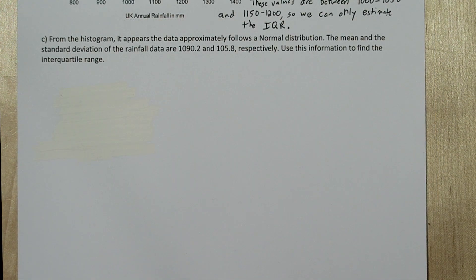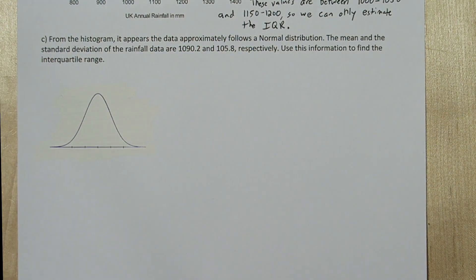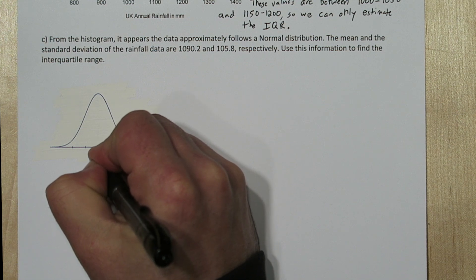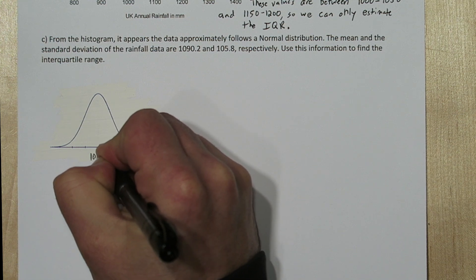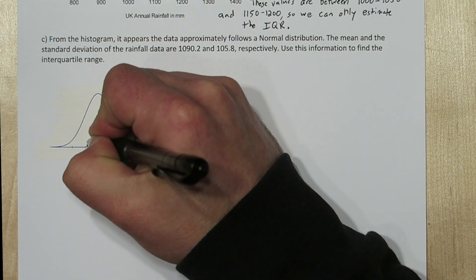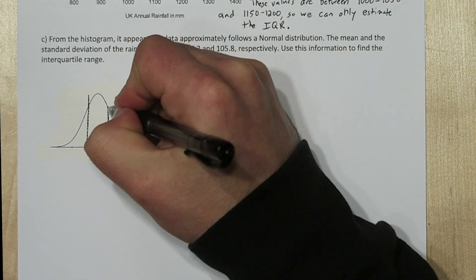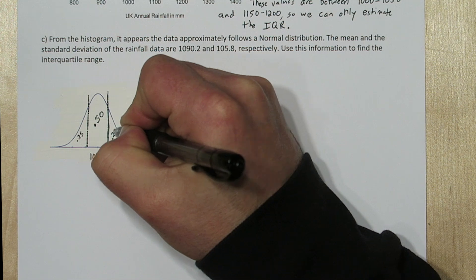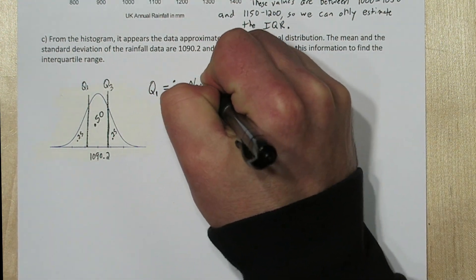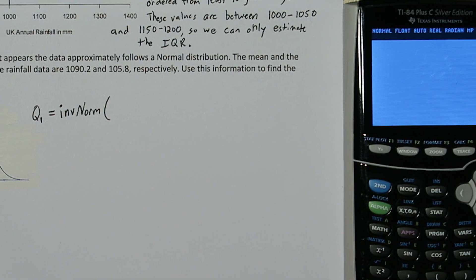If we assume the rainfall is normally distributed, then we can find the interquartile range. The middle of the distribution is at the mean, at 1090.2. We need to find what cuts off the lower 25% and the upper 25% of the distribution, because those will be our quartile one and quartile three values. To do this, we're going to use the inverse norm function.